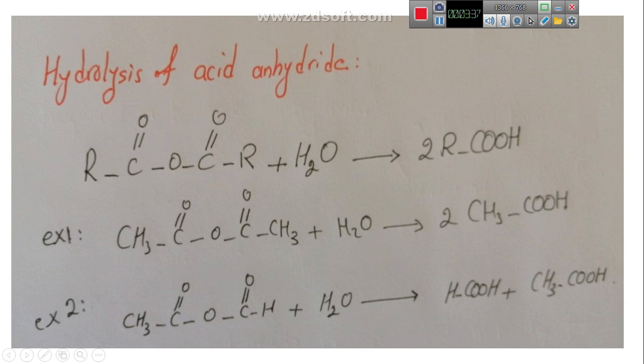The second one is a mixed anhydride, because here we have one carbon and two carbons. Similarly, it is the reaction which involves the breakage of the bond here, and this H2O gives OH to the first compound, becoming CH3COOH, and H to the second compound, becoming HCOOH, which is methanoic acid and ethanoic acid. Simply, similar anhydride or simple anhydride gives two same carboxylic acids, while mixed anhydride gives different carboxylic acids.